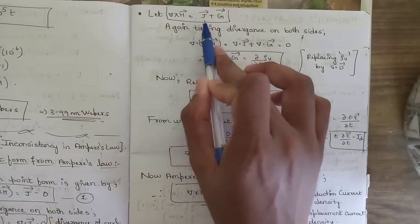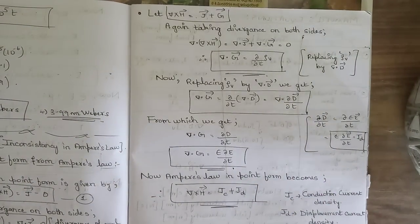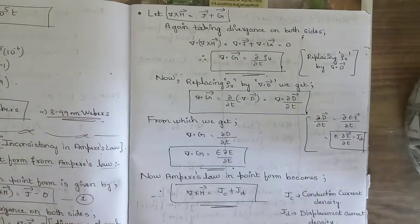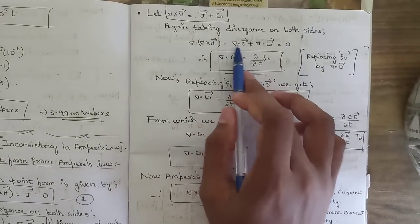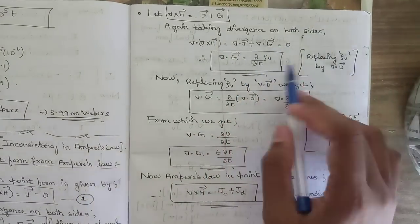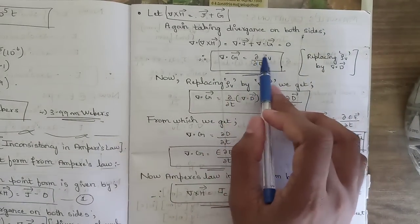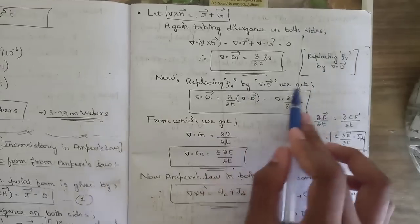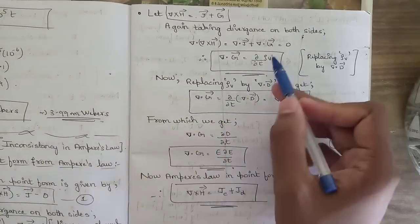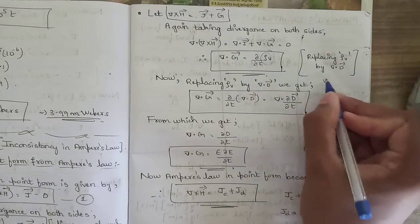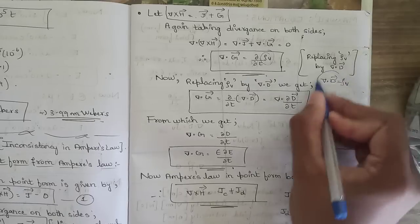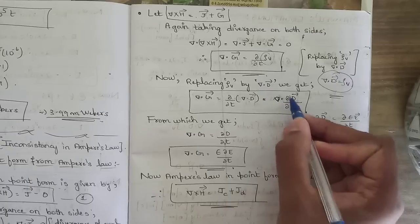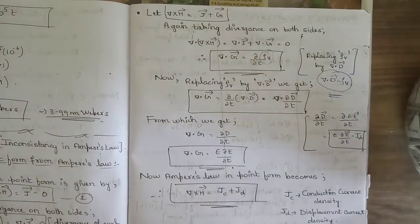To fix this, we assume ∇×H = J + G (a correction vector). Taking divergence: ∇·(∇×H) = ∇·J + ∇·G = 0, so ∇·G = -∇·J = ∂ρv/∂t. Replacing ρv with ∇·D (from Gauss's law: ∇·D = ρv), we get ∇·G = ∂(∇·D)/∂t.